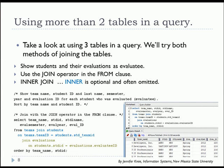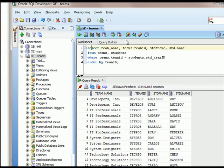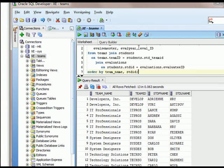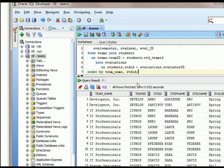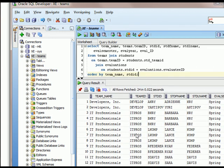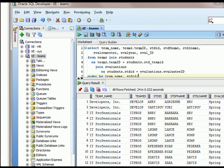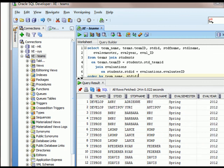I'll switch over to SQL developer. What we get here are the results of the query showing the team name, team ID, student ID, first name, last name, and evaluation information.